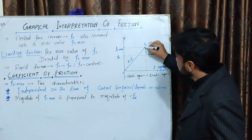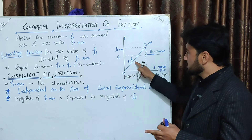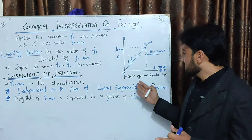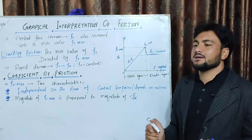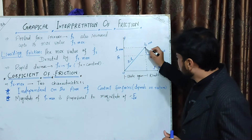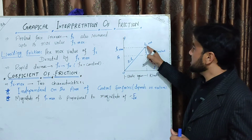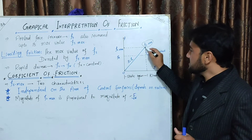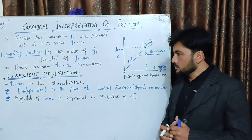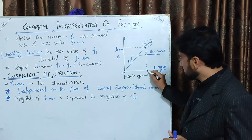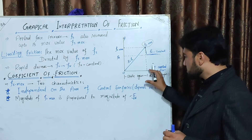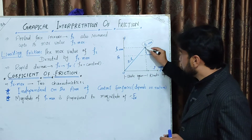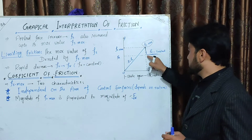The maximum value of static friction is shown on the graph. As applied force increases, static friction reaches a maximum value. The body remains stationary in the static region. The friction force increases to a maximum value, and then there is a rapid change.